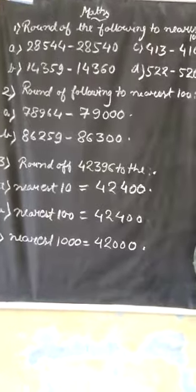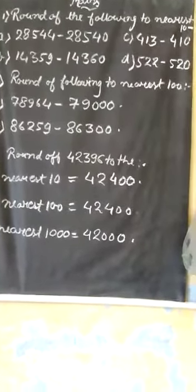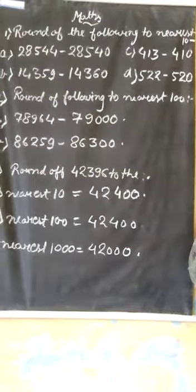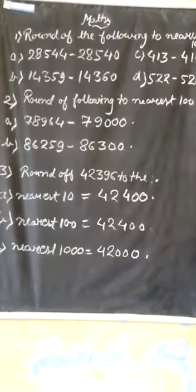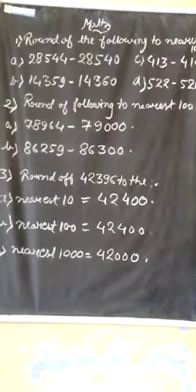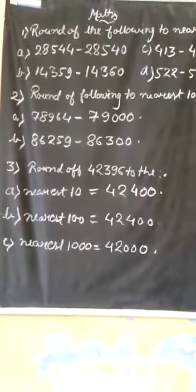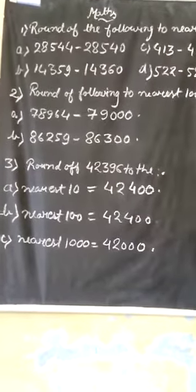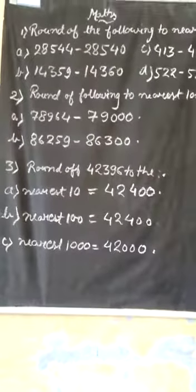Round off to nearest 10 for 42,396. It will be 42,400. Next we round to nearest 100, it will be 42,400.